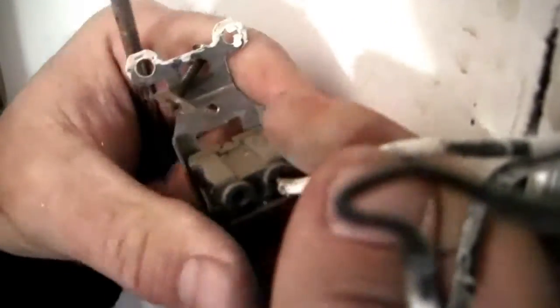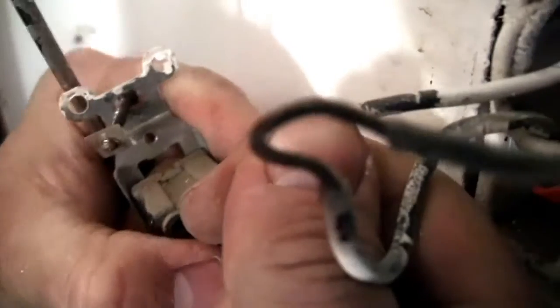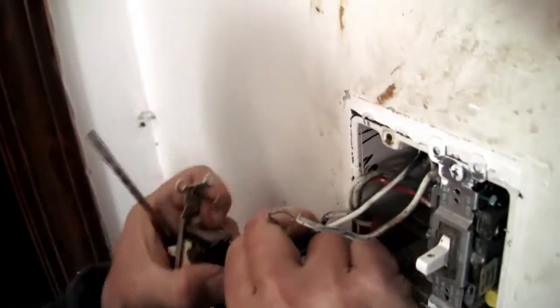Some switches have a release on them to release the back stabs. This one didn't. Sometimes you can pull them out but if it won't come out then you have to cut it and strip it back.